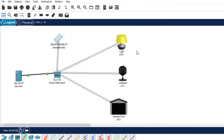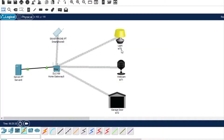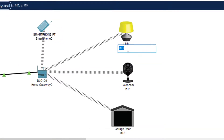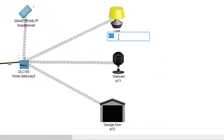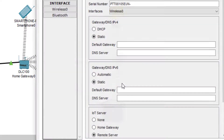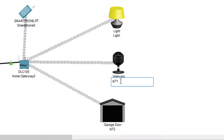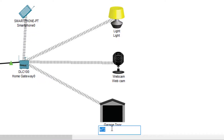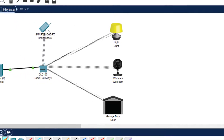Next we will see how we can control one device from another. Let us name these devices, because we don't know which is IoT 1 or IoT 2. I will just rename: one is 'light', one is 'webcam', and the last one is 'door'. Then I will remember what each device is when I put in the conditions.